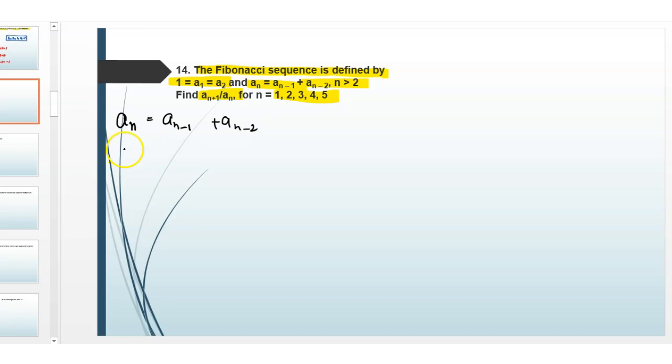Then we find An plus 1 divided by An for N equals 1. This will be A2 divided by A1, which equals 1 divided by 1, which is 1.